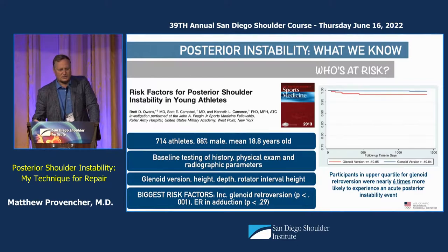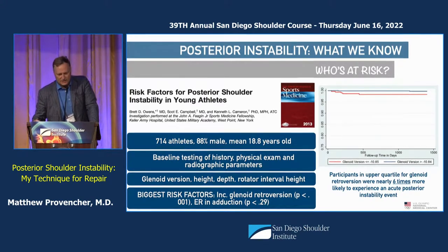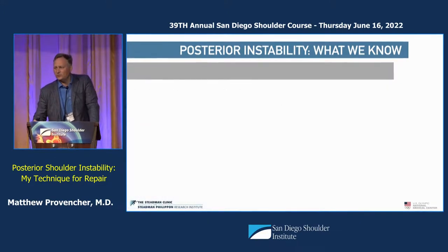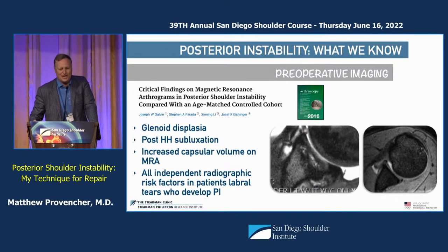What are the risk factors? Brett Owens looked at this in a pretty interesting study — MRIs were done on college students entering West Point, and they were followed over time. The baseline testing showed that glenoid version, height, and depth of the rotator interval were the biggest risk factors, including glenoid retroversion, for actually developing posterior instability.